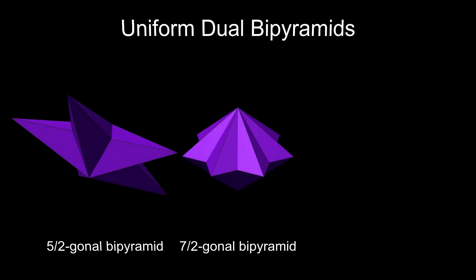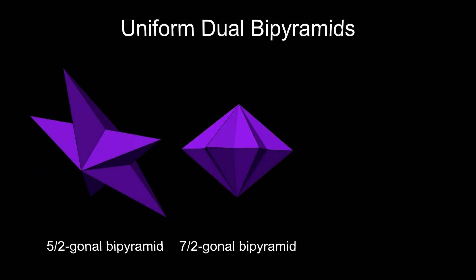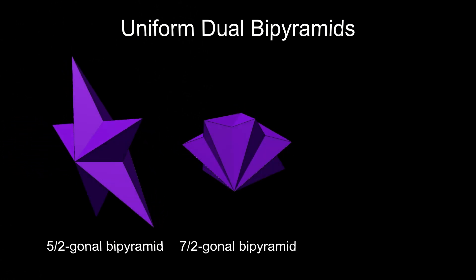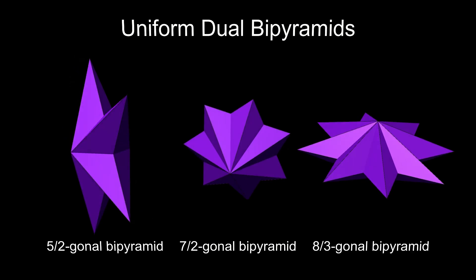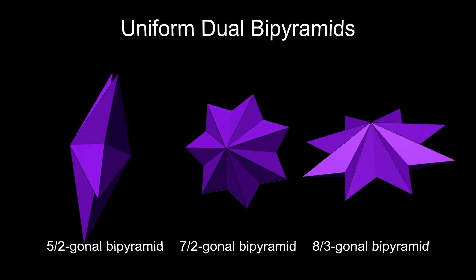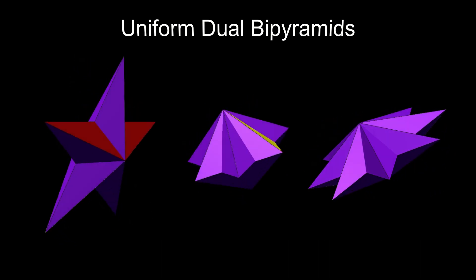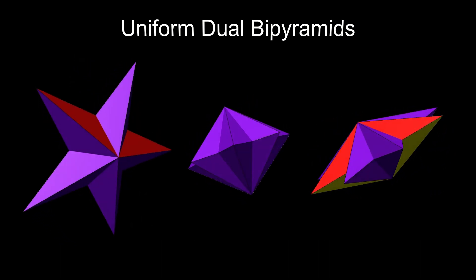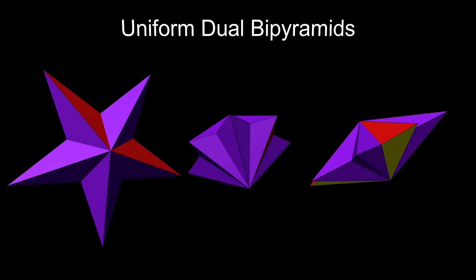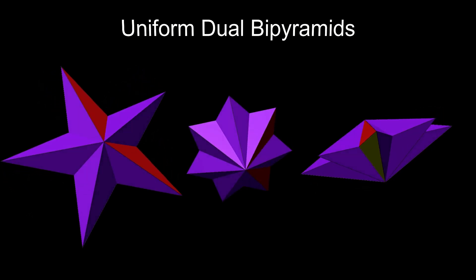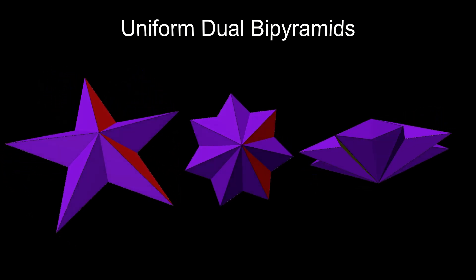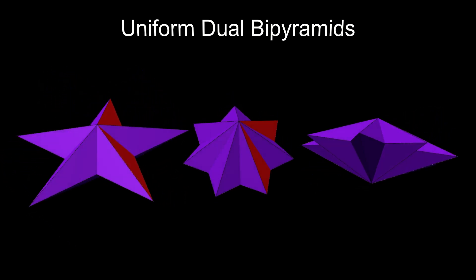These three are among the simplest. If I highlight one face in red and the opposite face in yellow, it helps to understand the structure. Each face is partly hidden within the centre.